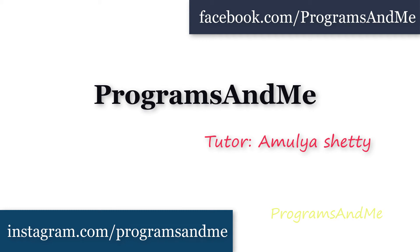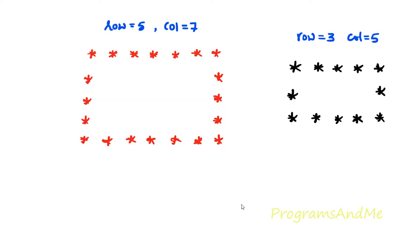Hello everyone and welcome to my YouTube channel. Today in this tutorial we will write a Python program to print stars in the rectangle shape. This pattern contains 5 rows and 7 columns, and inside the rectangle we are not printing any star — that means it is the hollow rectangle shape. When row is 3 and column is 5, we can see another pattern like this. So without talking much, let's begin with the program.